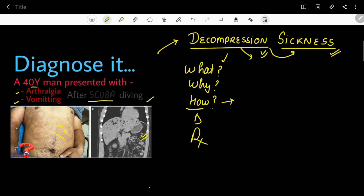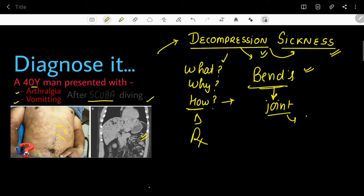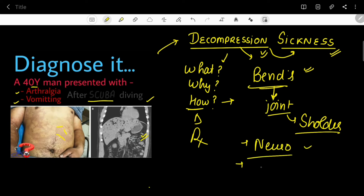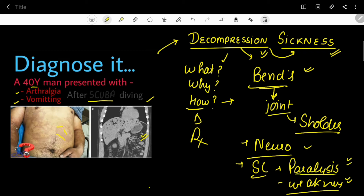The most common presentation is the 'bends' — which is also the name of the disease — referring to joint manifestations. The patient presents with joint pain, and the most commonly involved joint is the shoulder. The elbow, knee, and ankles can also be involved. Neurologically, the patient can present with headache and visual disturbances. When bubbles reach the spinal cord, this can lead to weakness in mild cases or paralysis in severe cases.